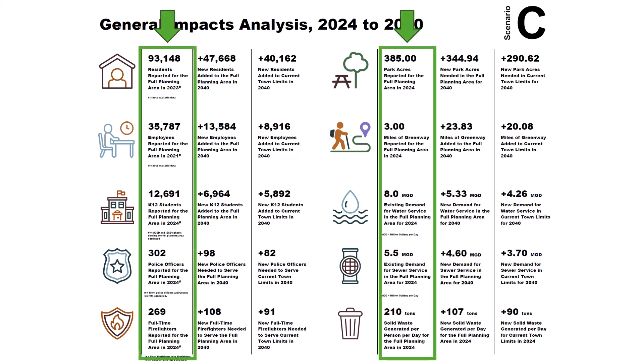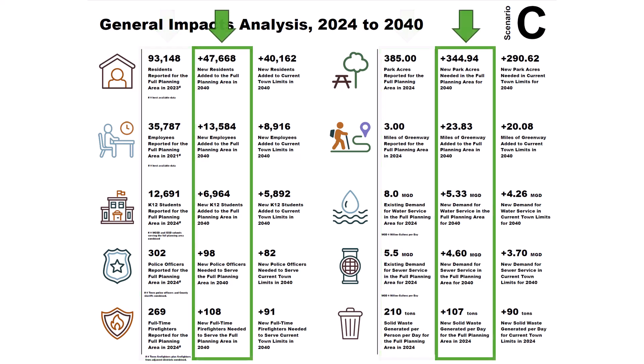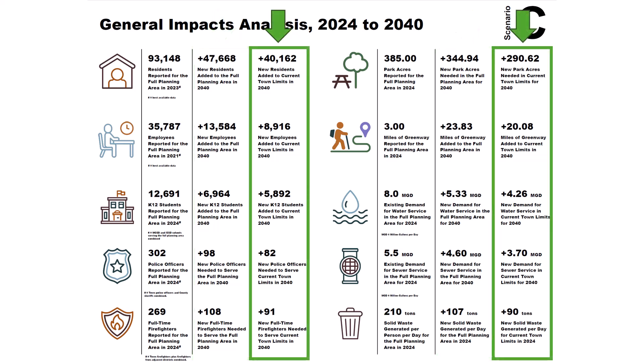The first column of data in the summary poster for Scenario C represents existing conditions observed for each indicator in the full planning area. The second column represents future year conditions expected for each indicator, reported for the full planning area. The third column also represents future year conditions — plan year 2040 — expected for each indicator, but reported for town limits only.